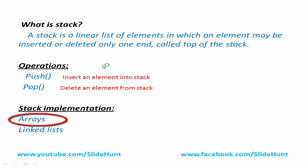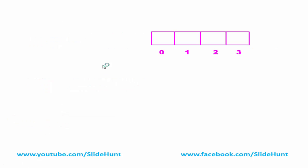Here we will learn array-based implementation. I'm going to create an integer array of four elements with the name 'stack', and use this array to store the stack. To perform stack operations we need a pointer variable called 'top' that points to the location of the top element. Initially, when the stack is empty, top equals minus one. We also need a variable called 'max size', which gives the maximum number of elements the stack can hold — in this case, max size equals four.